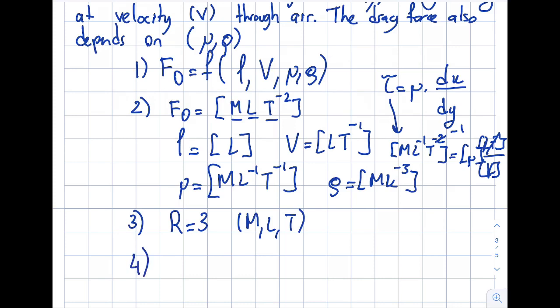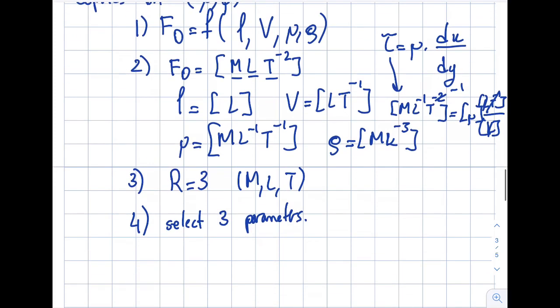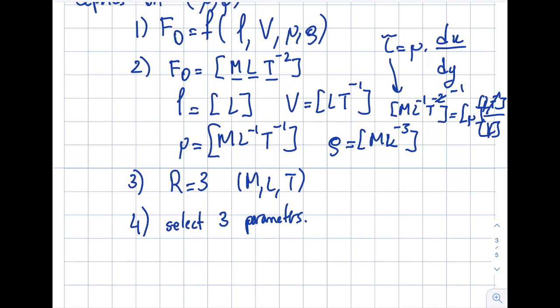Now the fourth step is the critical step. So I'm going to select R, which is 3, parameters, and these will be the repeating variables. So which three should I choose? My recommendation is do not pick the left-hand side. So the left-hand side in this particular case is FD. Do not pick the FD into the left-hand side of the equation. At this point it's mathematically okay to include FD or the left-hand side parameter, but it will be a challenge in the second half of this approach that you will see. So take that out. FD is not one of the ones that I would like you to take.